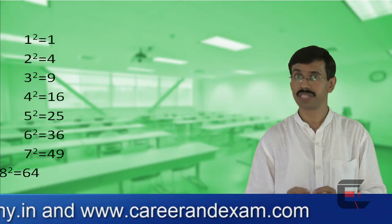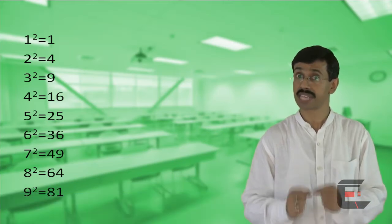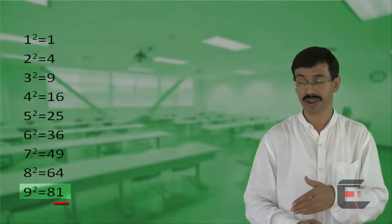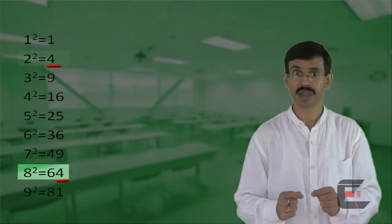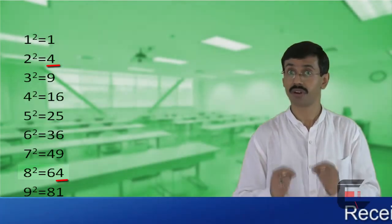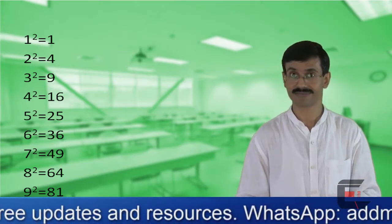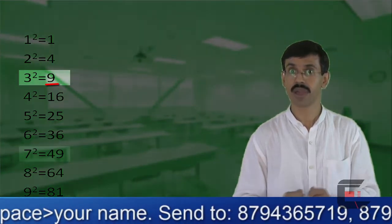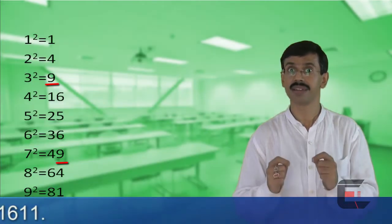Please observe that the units digits of the answers of the squares are same for 1² and 9². Similarly, for 2² and 8², the units digits of the squares is 4 in both cases. Again, for 3² and 7², the units digits of the squares is 9.